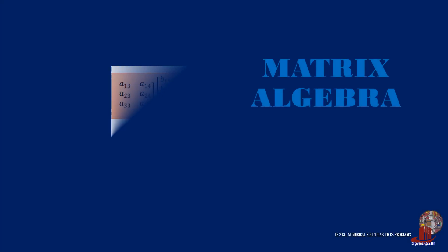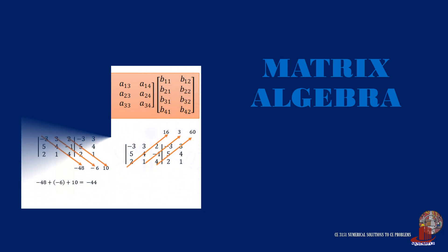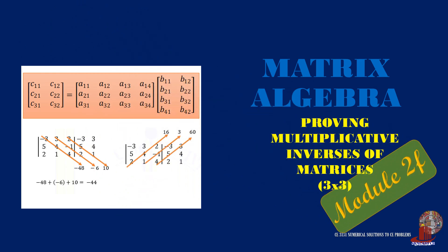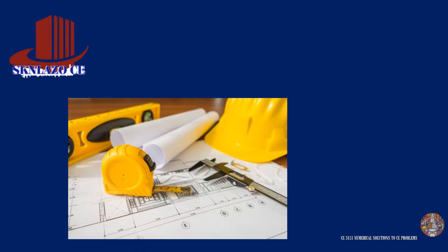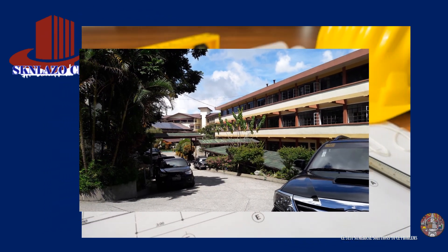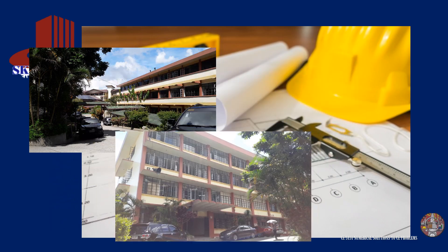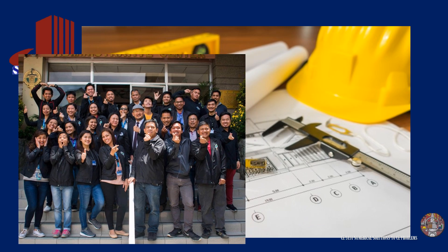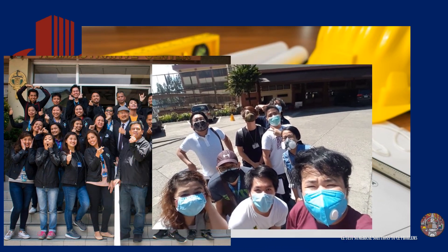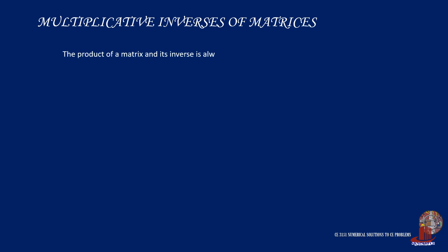Let's prove multiplicative inverses of a standard 3 by 3 matrix in this video. Welcome to Numerical Solutions to C Problems. The property for multiplicative inverses suggests that the product of a matrix and its inverse will always be an identity matrix. In mathematical statement, we say matrix A times its inverse is equal to I.